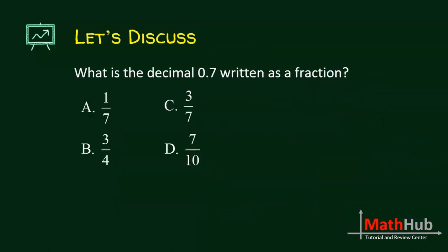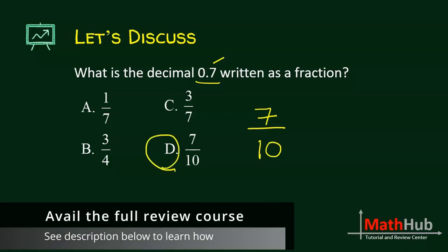What is the decimal point 7 written as a fraction? So we are just converting a decimal to fraction. You copy without the decimal, and then over, determine the power of 10 that you will use. You only have 1 decimal place, so 10. So the answer is letter D.